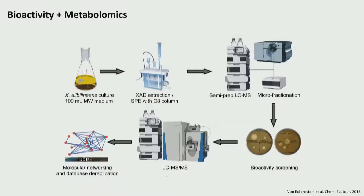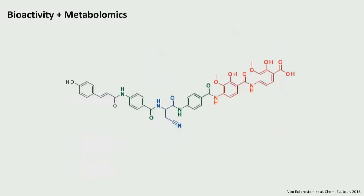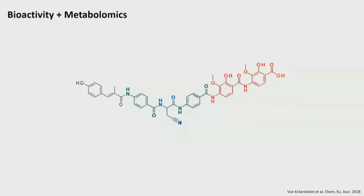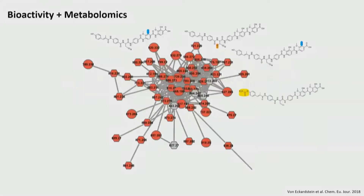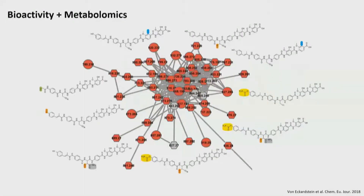We used these to prioritize samples and take deeper dives into the metabolome. Besides one known natural product here — albicidin — we could map out the space in more detail and actually find an entire family of these molecules.